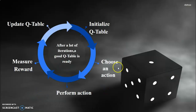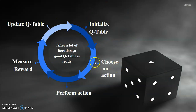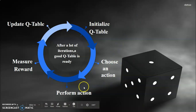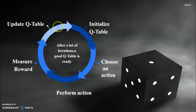Here's a summary of Q-learning. First, initialize the Q-table, then choose an action, perform the action, measure the reward, and update the Q-table. After many iterations, a good Q-table is ready.